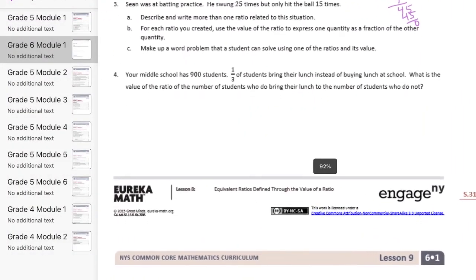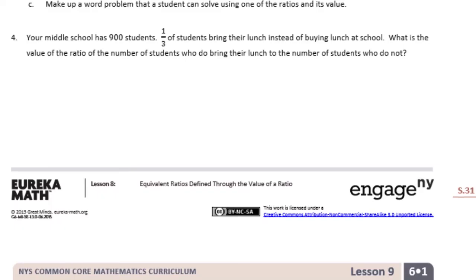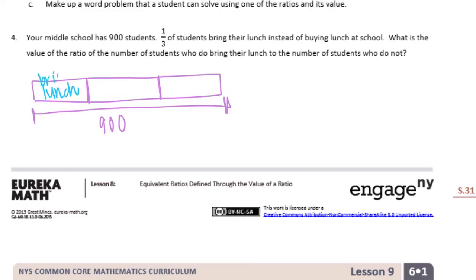Okay, back to this. Here's number 4. Your middle school has 900 students. One third of the students bring their lunch instead of buying lunch at school. What is the value of the ratio of the number of students who do bring their lunch to the number of students who do not? We have, let's make a tape diagram here. So the school has 900 students and one third bring their lunch. So it's broken into thirds. The total here is 900. So this portion brings their lunch. And the other part buys their lunch.